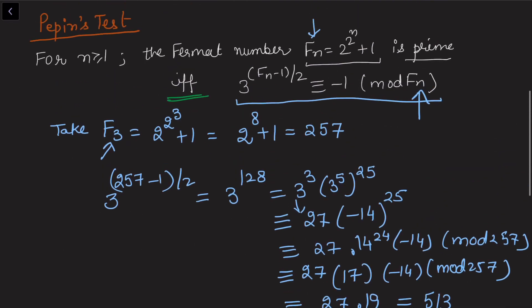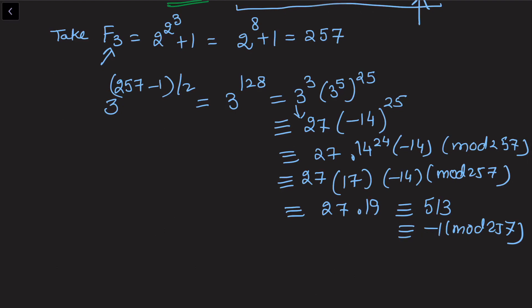Look at the result again—we wanted to check if 3^((Fn-1)/2) ≡ -1, and here we got exactly that. So we conclude that F3 is prime.